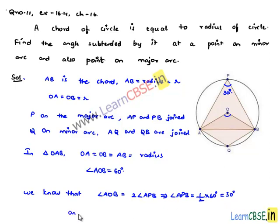Therefore, the angle on the point on the major arc is 30 degrees.